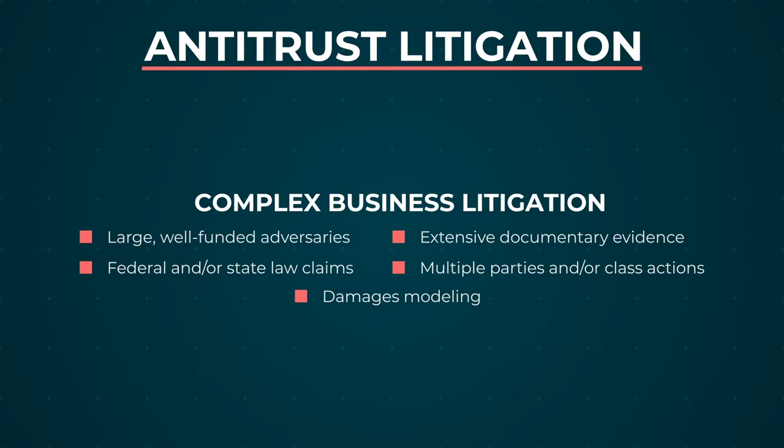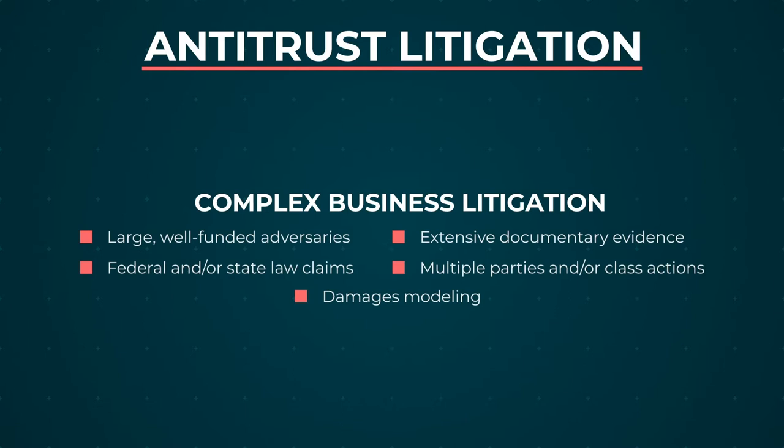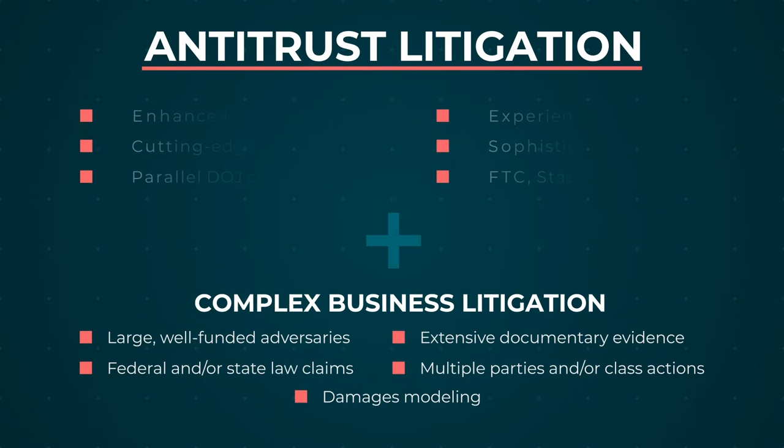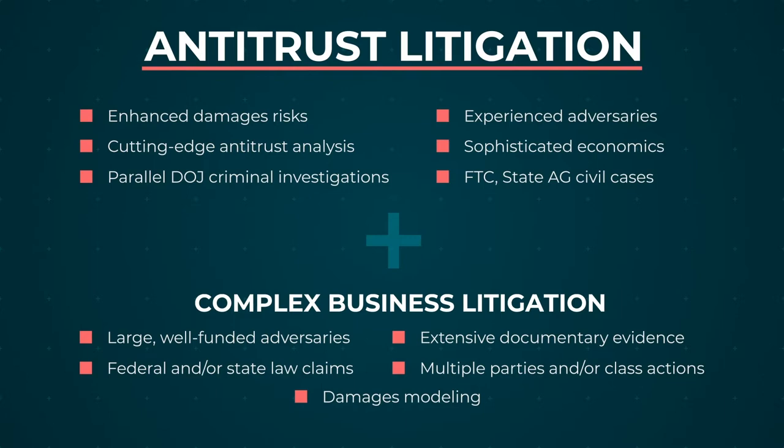That's different than complex litigation. You don't typically have a parallel criminal investigation, the result of which is, among other things, that witnesses may assert the Fifth Amendment and not testify. That could be a witness who could actually be helpful to talk about the key events and explain that they're not as problematic as the other side is characterizing them. But they're not available because they're asserting the Fifth and not testifying at all. Or a company being investigated may have an obligation to cooperate with the DOJ and turn over documents—and when they do, those documents very often go straight to the civil plaintiffs as well.